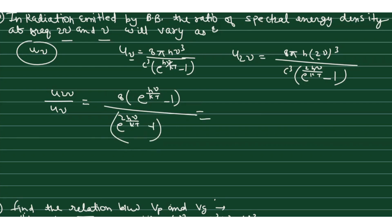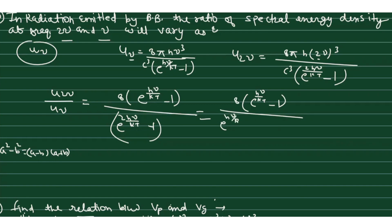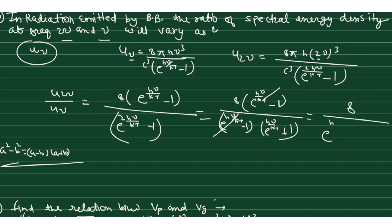We now simplify the denominator using the identity a² − b² = (a − b)(a + b). We write e^(2hν/kT) − 1 = (e^(hν/kT) − 1)(e^(hν/kT) + 1). Substituting, the (e^(hν/kT) − 1) terms cancel, leaving the final answer: u(2ν)/u(ν) = 8 / (e^(hν/kT) + 1). That is the ratio of spectral energy densities at frequencies 2ν and ν.